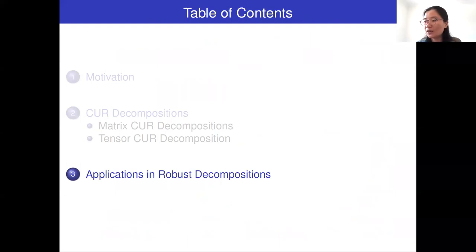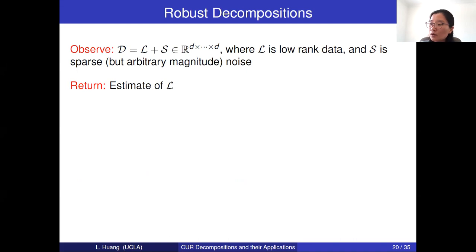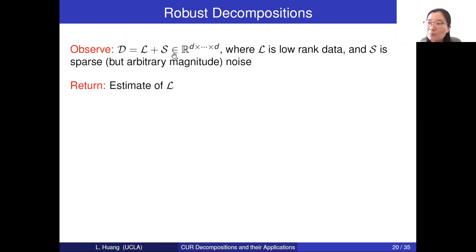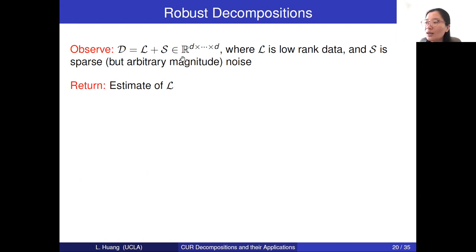Next, let's move to the application in the robust decomposition. What is the robust decomposition? The observed data D equals the summation of the low-rank data plus some sparse data. For the sparse data, the number of non-zero entries should be as few as possible, but we have no restriction on the magnitude of the sparse data. The main goal of the robust decomposition is to separate the low-rank data and the sparse data from the observed data.